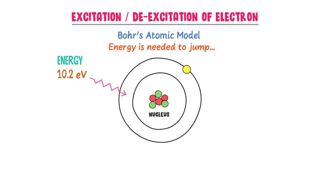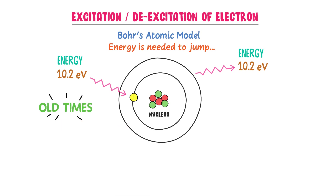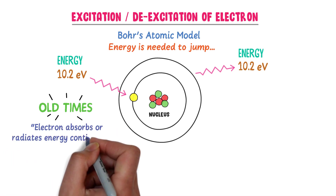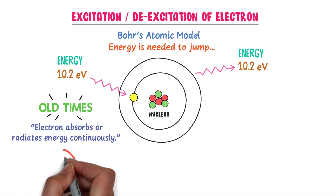After some time, this electron will be de-excited. It will give off or radiate the same amount of energy — 10.2 electron volt — to the surrounding. Now listen carefully. In old times, the classical period, scientists believed that an electron absorbs or loses energy continuously, which is totally wrong.